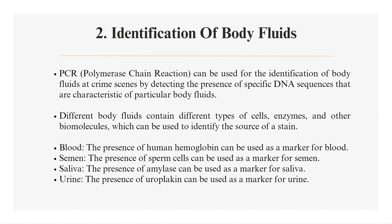Another application is the identification of body fluids. PCR can be used for the identification of body fluids at crime scenes by detecting the presence of specific DNA sequences characteristic of particular body fluids. Different body fluids contain different types of cells, enzymes, and other biomolecules, which can be used to identify the source of a stain. Blood: the presence of human hemoglobin can be used as a marker. Semen: the presence of sperm cells can be used as a marker. Saliva: the presence of amylase can be used as a marker. Urine: the presence of uroplakin can be used as a marker.